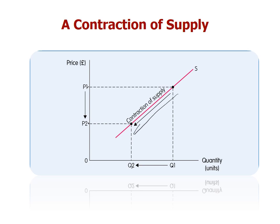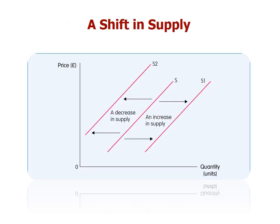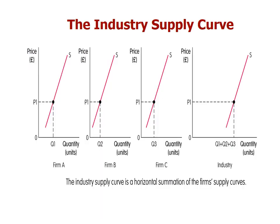We can also show a decrease in supply and an increase in supply that are not caused by price — these are shifts caused by other factors like technology, more competition, and taxes and subsidies. A rightward shift shows an increase in supply; a leftward shift shows a decrease in supply.